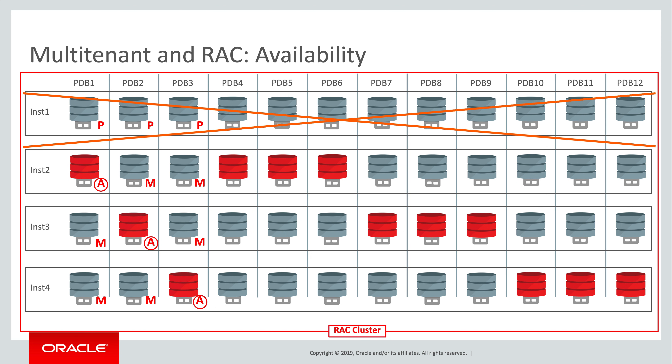In this video we've seen the close integration between multi-tenant and RAC. We've seen how a PDB's affinity to a node in the cluster is defined by opening its services there. We can elastically adjust to changing workloads simply by changing the affinity of PDBs for load balancing purposes. Most relevant to our theme of high availability, we've seen how effectively the surviving nodes of a cluster can absorb the additional burden in the event of a node failure, with per-PDB locked domains minimizing both the outage in the affected PDBs and the brownout experienced in the surviving nodes.